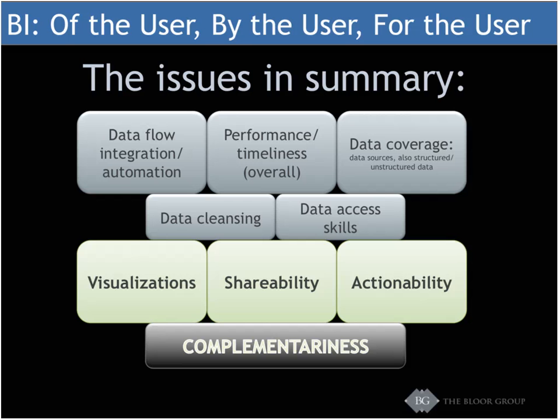For the final slide, putting together all the issues in summary: data flow, integration and automation must happen for this to work. There's performance — it has to be timely. There's data coverage in terms of the data sources you can get at, structured and unstructured data, and data cleansing. There's data access skills — knowing what data you can put together and what it actually means. Then there's visualization, shareability, and actionability. And there's complementariness: people don't get given BI capability without some already existing, so you have to shoehorn the new stuff in with the old stuff.